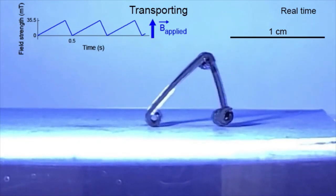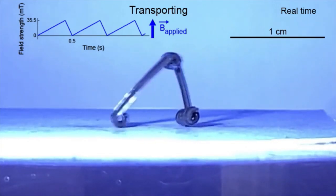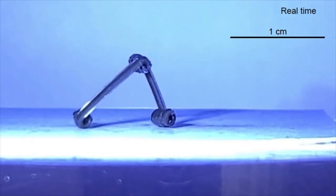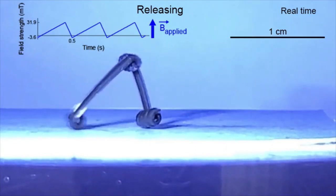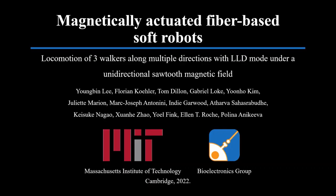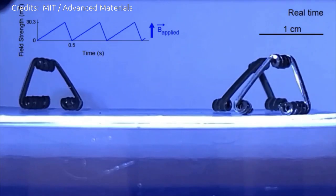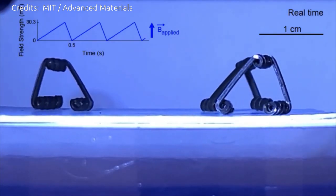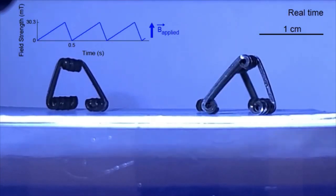The robots developed by the MIT team are not uniformly magnetized. Instead, they are strategically magnetized in different zones and directions, so a single magnetic field can enable a movement-driving profile of magnetic forces.